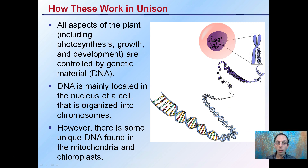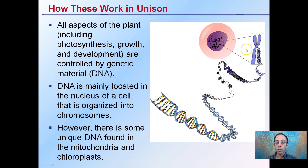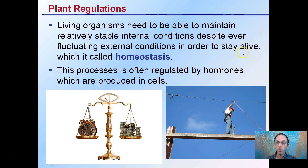All these work in unison. All aspects of the plant, including photosynthesis, growth, and development, are all controlled by the genetic material, or the DNA. We see that double helix structure here. It's located mainly in the nucleus of the cell and is organized into structures called chromosomes. However, there is some unique DNA found in both the mitochondria and the chloroplasts.